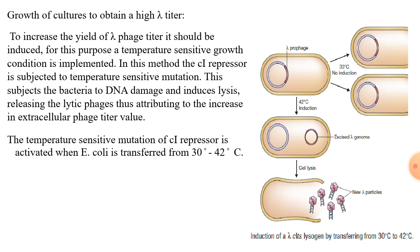If a mutation is carried out in the C1 repressor gene, it renders the repressor active at lower temperatures and degrades it at higher temperatures. That is, when the bacteria is grown at 30°C, the C1 repressor works fine. If it is transferred to 40°C, the C1 repressor is degraded. This causes the phage to enter into the lytic cycle and abort the lysogenic cycle.